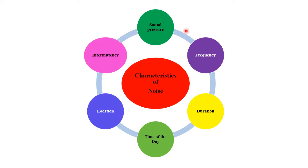These are the characteristics of noise. Noise has different characteristics: number one, sound pressure; frequency; duration; time of day; location; and intermittency. Sound pressure is the pressure of a wave created from any source. Frequency refers to how frequent the sound level is. Duration is how long it passes from source to receiver. Time of day refers to at which time of day the noise occurs. Location is whether it is residential, industrial, or a silent zone. Intermittency refers to how intermittently the frequency passes from source to receiver through the transmission path.